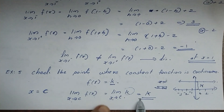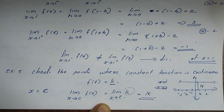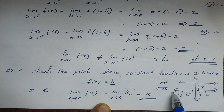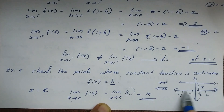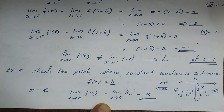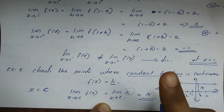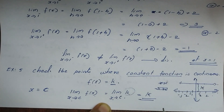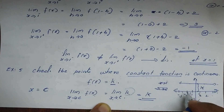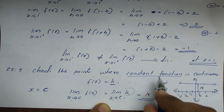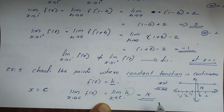So the constant function is continuous for all real numbers — whether x equals 1, 2, 3, -1, -10, or any value, the function value is always k. Therefore, the constant function is continuous everywhere on all real numbers.